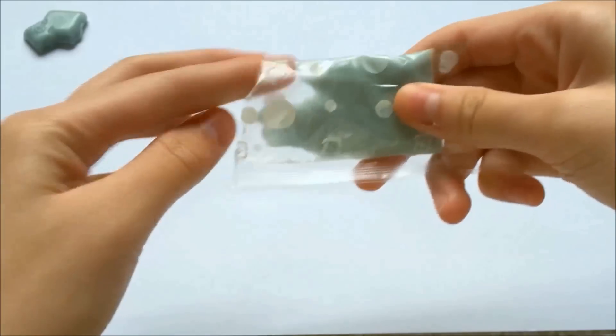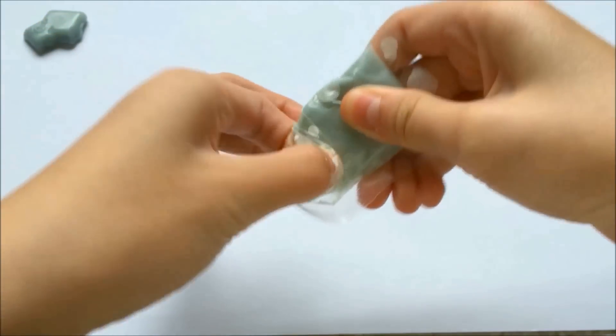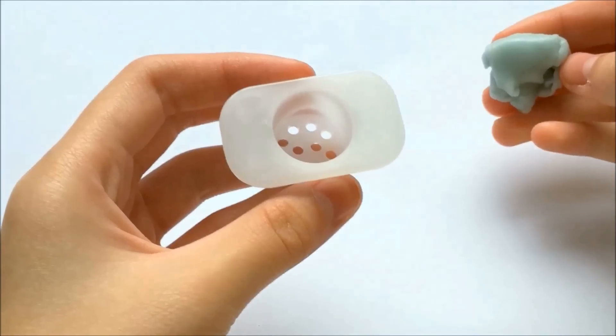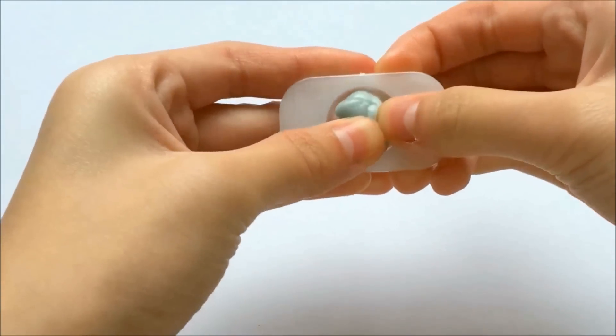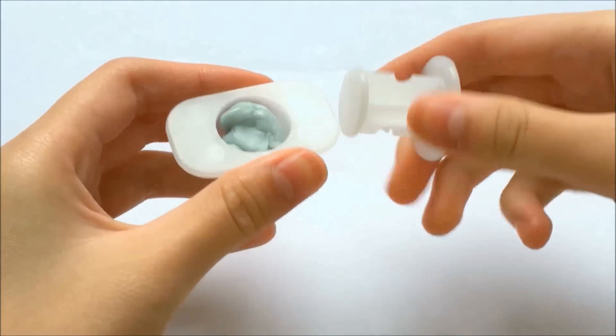And now you're going to break off a bit more paste. Now you can put the candy into the extruder and push down on it.